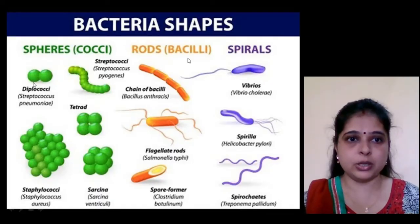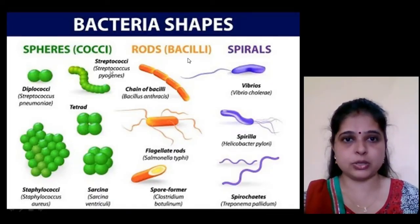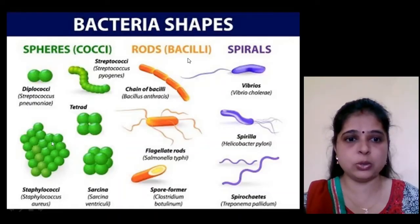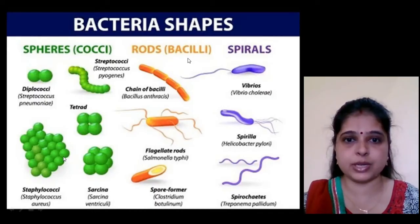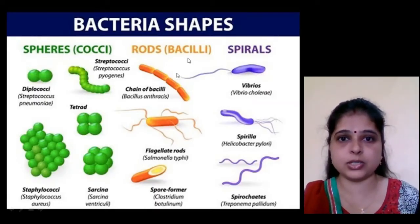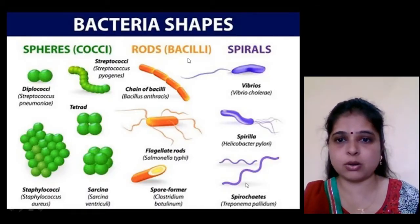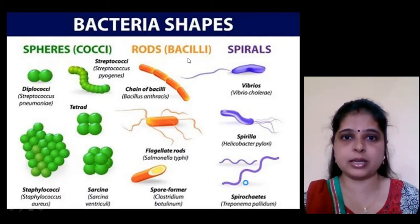Diplococci have two cells joined together; streptococci form a chain of bacteria; tetrad is a four-cell stage; sarcina is an eight-cell stage; and staphylococci looks like bunches of grapes. Other forms include rod, chain of bacilli, flagellate rod, and spore-formers — all different shapes of bacteria.